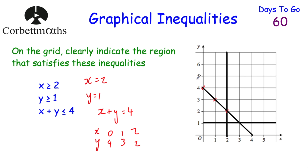We've drawn our three lines: x = 2, y = 1, and x + y = 4. Now we want to find the region that satisfies these inequalities. For x ≥ 2, all the points on that line and to the right satisfy the inequality. Anything to the left of that line — where x values are less than 2 — wouldn't work. I'm just going to make little markings to show that anything to the left of that line wouldn't work.